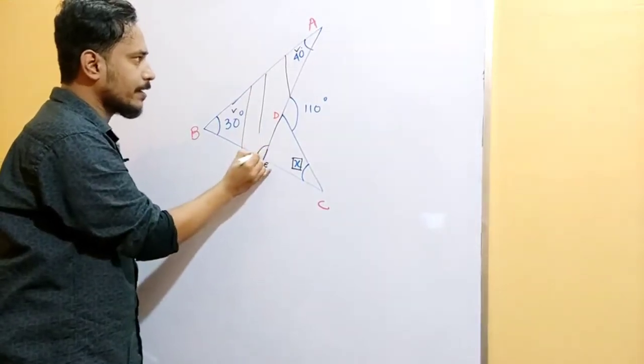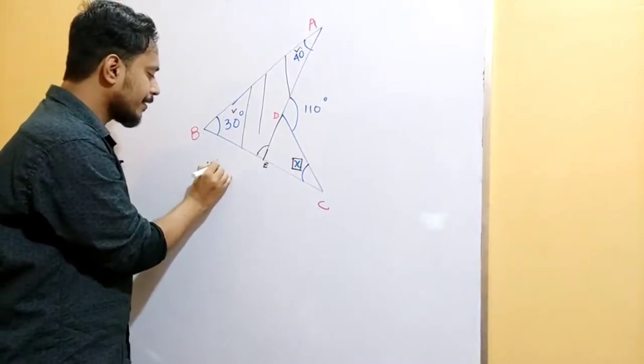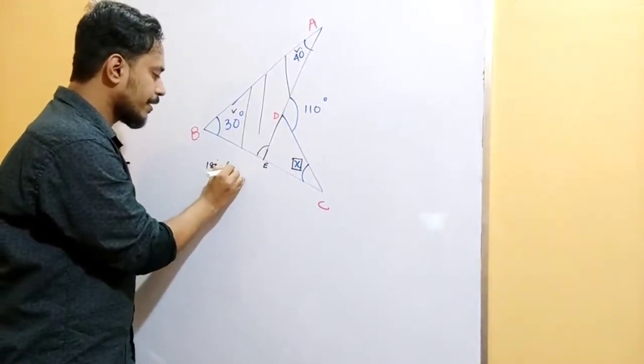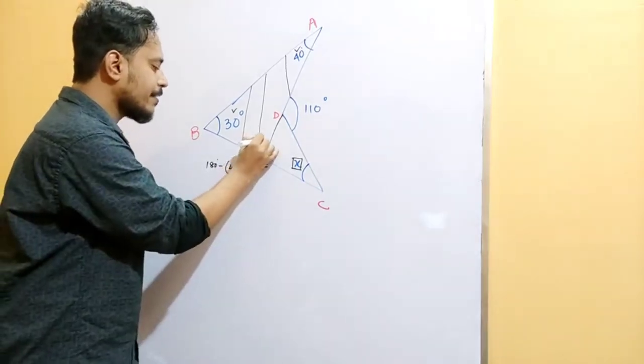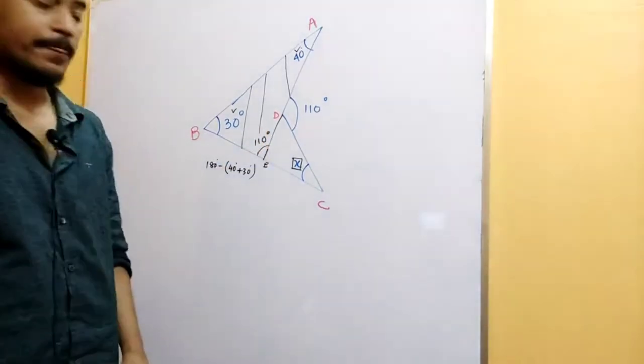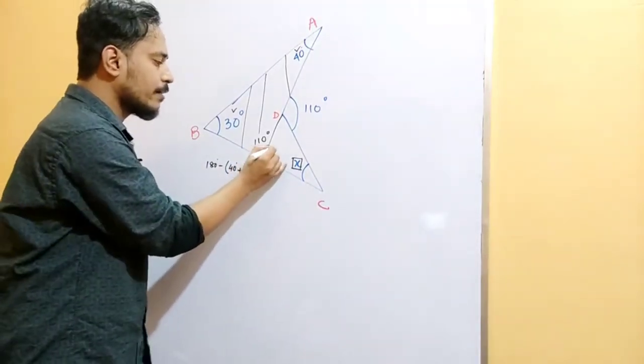This angle is 180 minus 40 plus 30. 180 degree minus 40 degree plus 30 degree. The result is 110. This is 110. So, this angle is 70 degree.